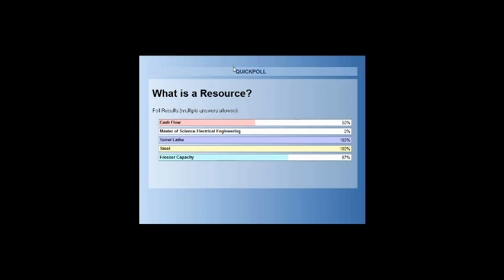Let's see what we got. A hundred percent of you chose turret lathes and steel. These are classic resources that we'd want to include in resource requirements planning. As a matter of fact, steel is one of the examples we'll see in a few minutes. Freezer capacity — if your business is dealing with frozen goods and you have a limited amount of freezer space, that can be a critical resource. Cash flow: half of you chose cash flow. If you don't have the money to buy the material that you need in order to keep your production line running, you're in deep trouble.